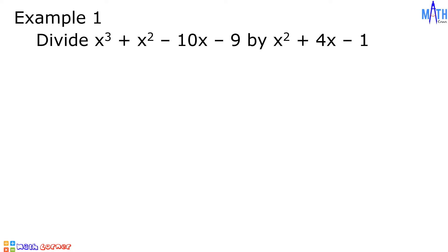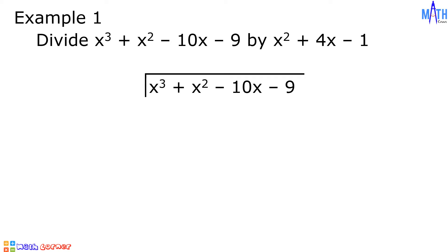Let us rewrite this. We have x cubed plus x squared minus 10x minus 9 divided by x squared plus 4x minus 1. Let us divide the first term of the dividend by the first term of the divisor: x cubed divided by x squared is equal to x.